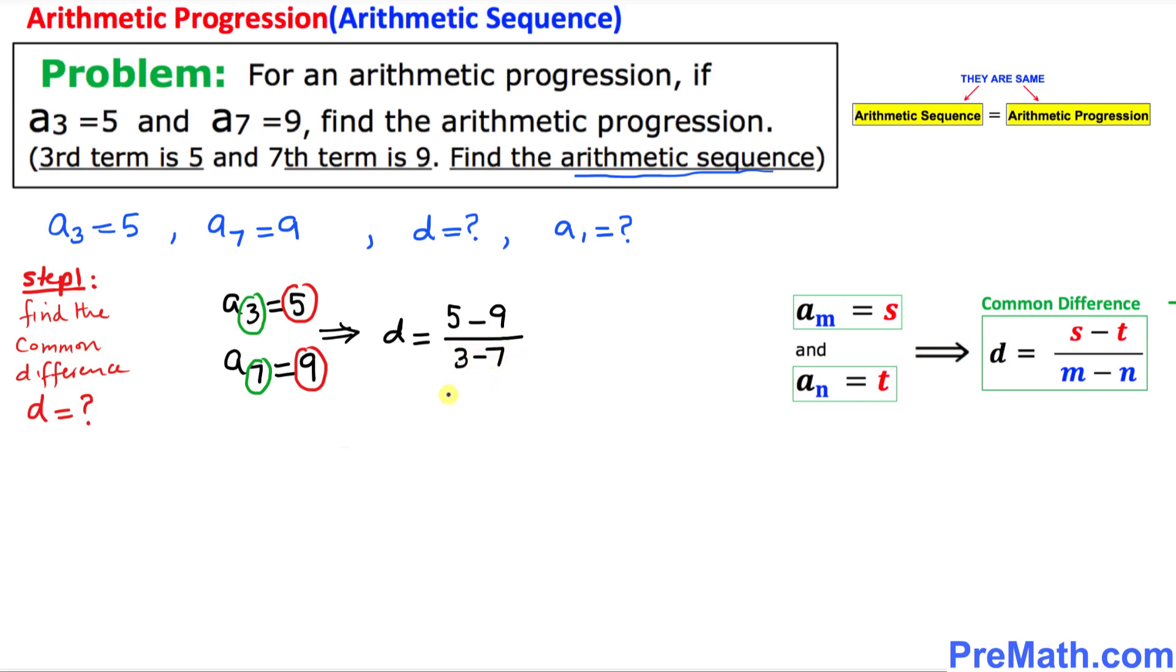Let's simplify this. So d = (5 - 9)/(3 - 7) = -4/-4.